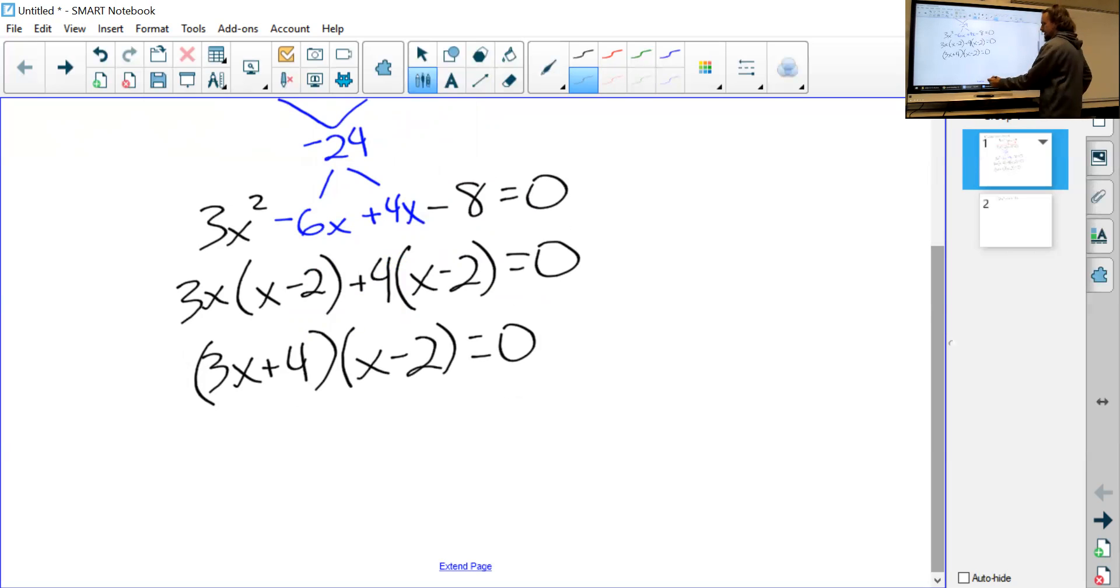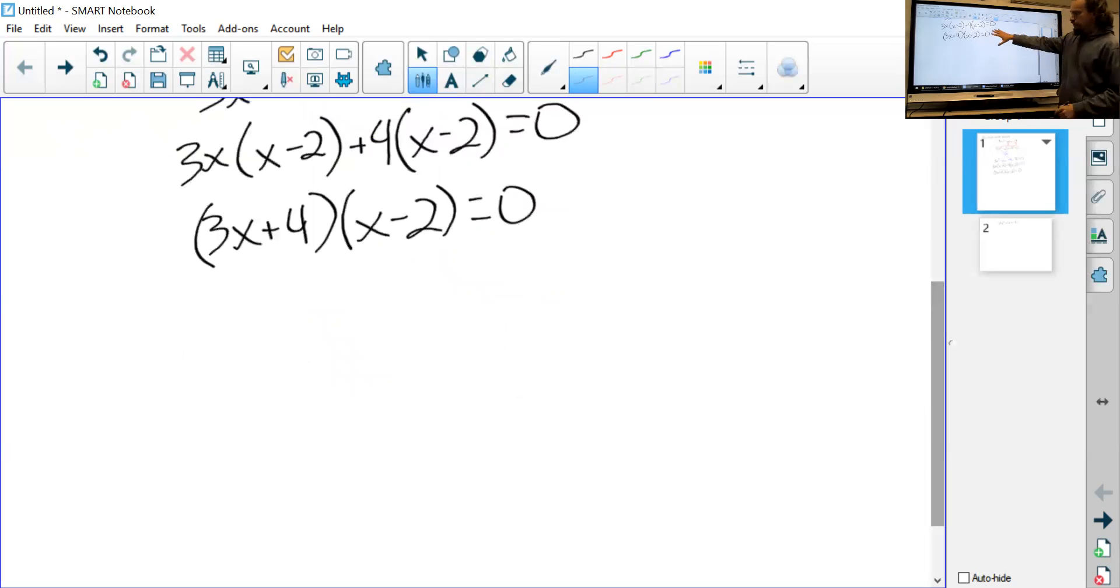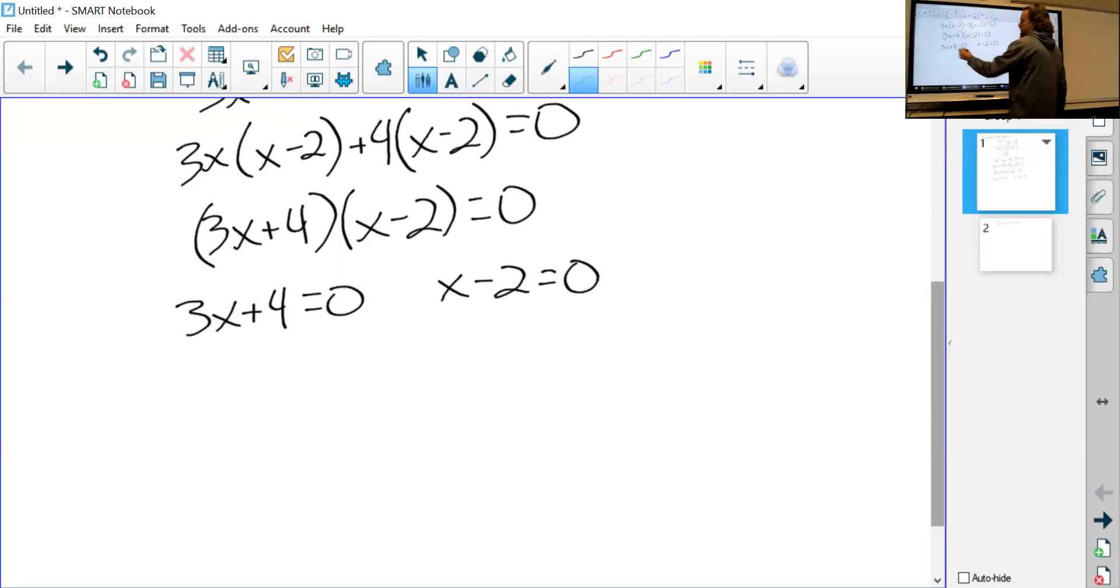How we do that is we actually separate what we have into two equations. So I'm going to say either 3x + 4 needs to equal zero, or x - 2 needs to equal zero. We're going to have two solutions because it's quadratic. Now I'm just solving for x. Minus 4, minus 4, so 3x = -4, and x = -4/3.